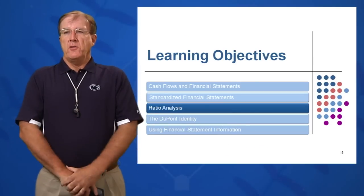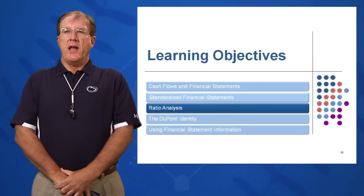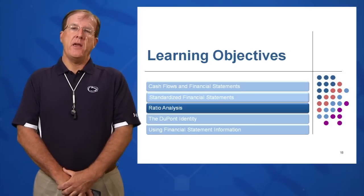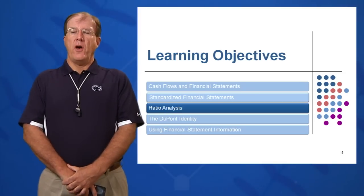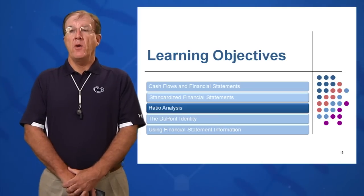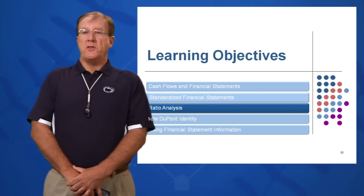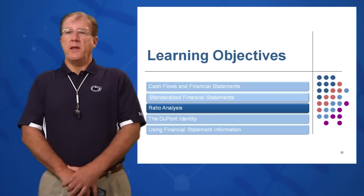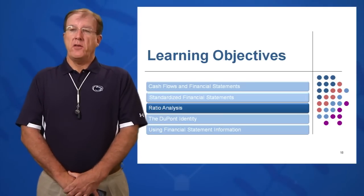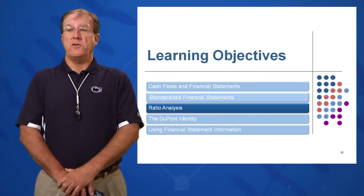The third topic we'd like to talk about today, the third key learning objective, is ratio analysis. What can we do with all of these numbers that we have on our income statement, balance sheet, and cash flow to help us look at the future, to help us detect problems, and to help us determine how we're performing relative to others within our company, within the industry, and across industries.